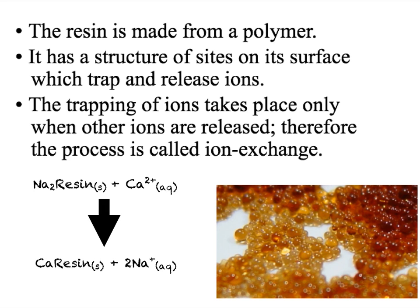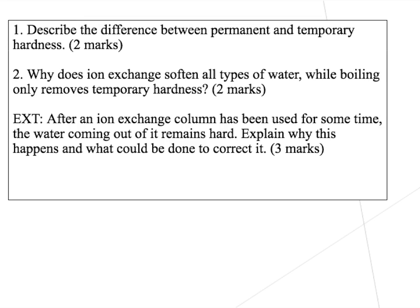Here are three example exam questions on water hardness. First, describe the differences between permanent and temporary hardness. Second, why does ion exchange soften all types of water whilst boiling only removes temporary hardness? Third, after an ion exchange column has been used for some time the water coming out remains hard — explain why this happens and what could be done to correct it. Pause the video and answer the three questions.